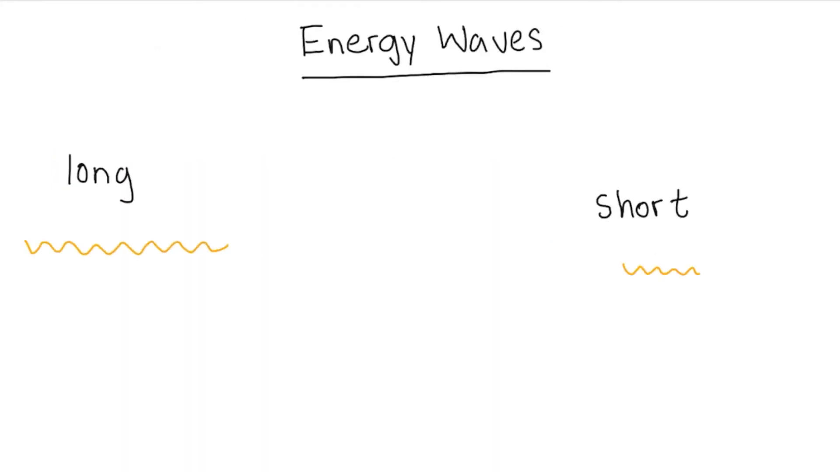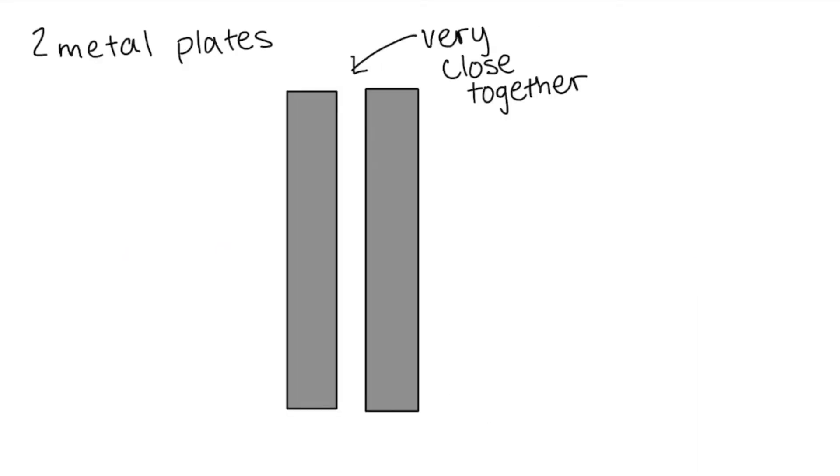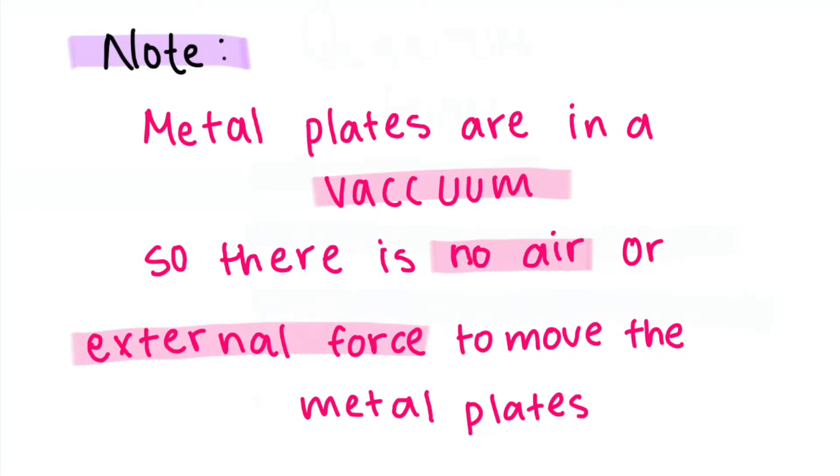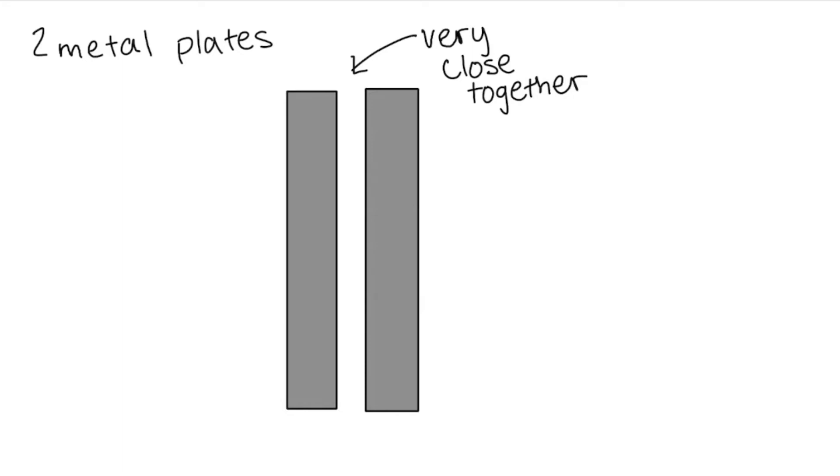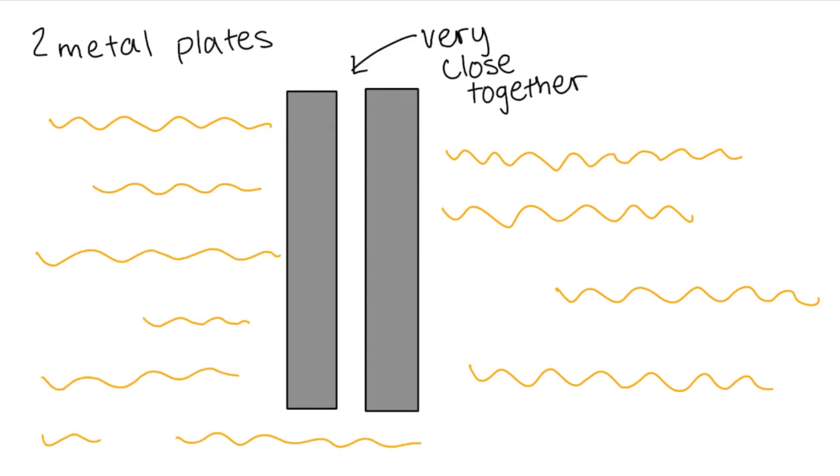We know energy waves come in long and short forms. Quantum foam energy waves are in long and short. So he took two metal plates and put them very close together in a vacuum, so there's no air or external force to move the plates. And since the plates were very close together, even though they're in a vacuum, that doesn't mean that there's no quantum foam.